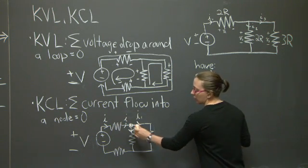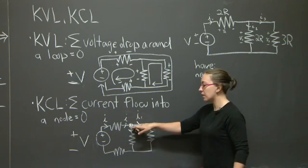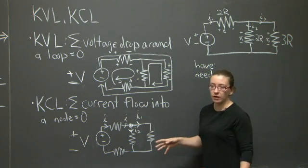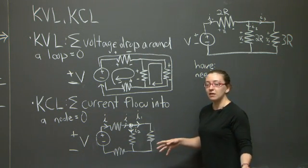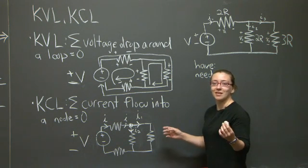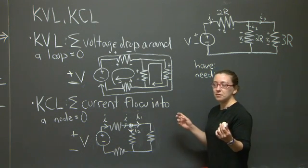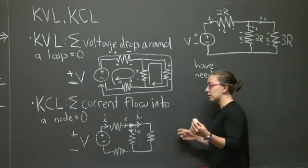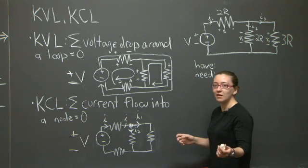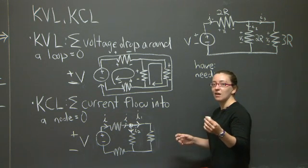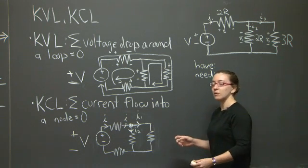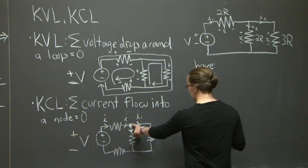When looking at the current flowing through a particular node, I pick a direction — it's arbitrary which direction I pick. Typically, you pick currents flowing into the node as being positive. You sum up all the currents and set that equal to zero.